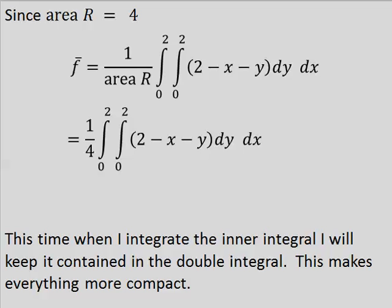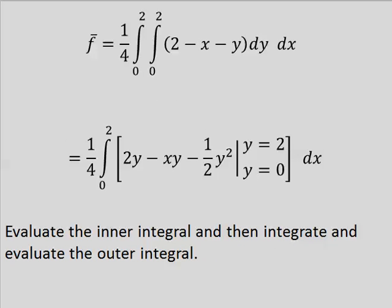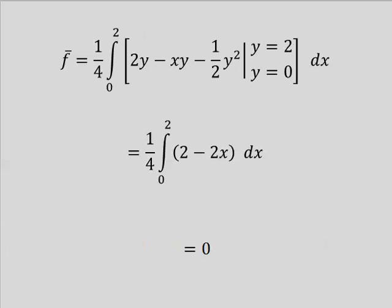And this time when I integrate the inner integral, I will keep it contained in the double integral. This makes everything more compact. Evaluate the inner integral and then integrate and evaluate the outer integral, and we get zero.